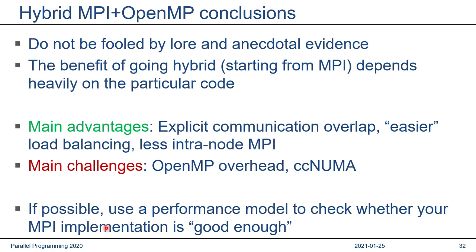Conclusions: Don't be fooled by lore and anecdotal evidence. The benefit of going hybrid depends heavily on the particular code — there is no silver bullet. Main advantages of combining MPI and OpenMP are explicit communication overlap, easier load balancing via OpenMP, and less inter-node MPI communication. Main challenges include OpenMP overhead and CC-NUMA placement problems. If possible, use a performance model to check whether your MPI application is already good enough — if it is, don't make your program more complicated than necessary.